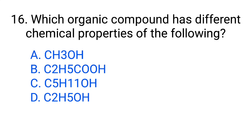Question number 16. Which organic compound has different chemical properties from the following? Option A: CH3OH. B: C2H5COOH. C: C5H11OH. D: C2H5OH. The correct answer is option B, C2H5COOH.